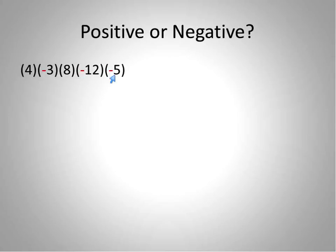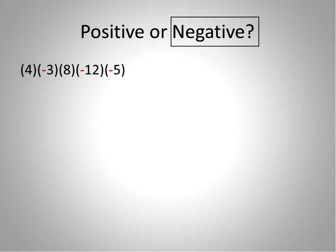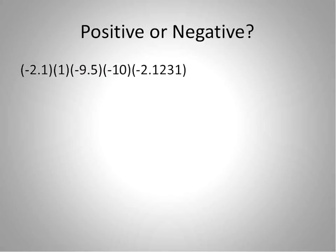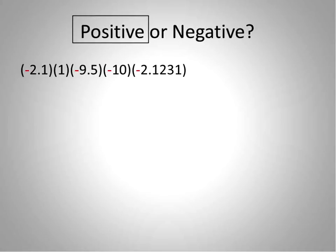Now with actual numbers: one, two, three — there are three negative signs. Three is an odd number, so your answer will be negative. I'm not doing the full math right now, just determining if it's positive or negative. Let's do one more with decimals — again, I don't care what the decimals are, just count the negative signs: one, two, three, four. Four is even, therefore my final answer will be positive.